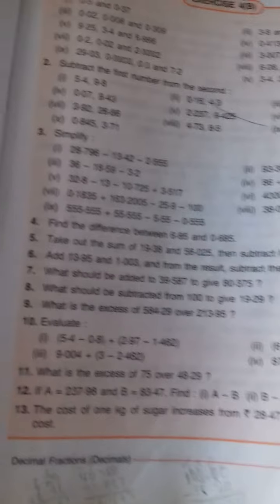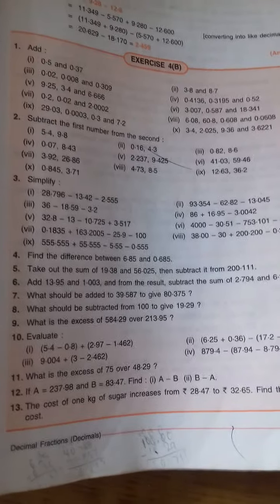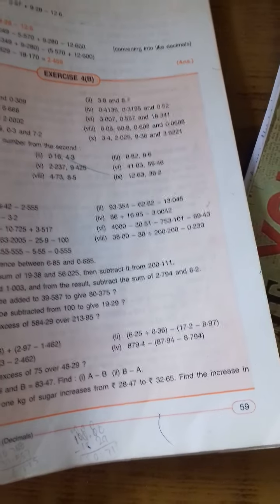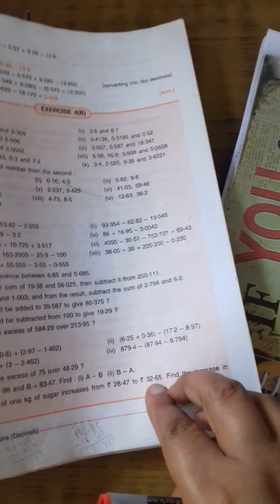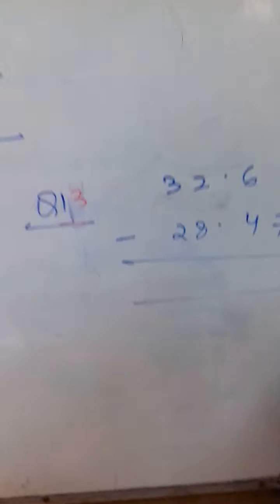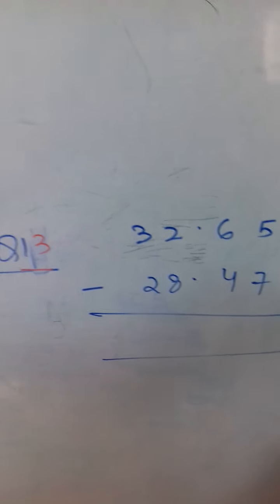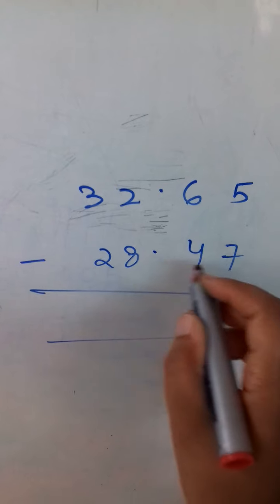Now question number 10. Not 10, sorry, 3. The cost of 1 kg of sugar increases from 28.47 to 32.65. It has increased. Earlier it was 28.47, now it is 32.65. So find the increase in cost. How much it has increased. So again, subtract. 32.65 minus 28.47.